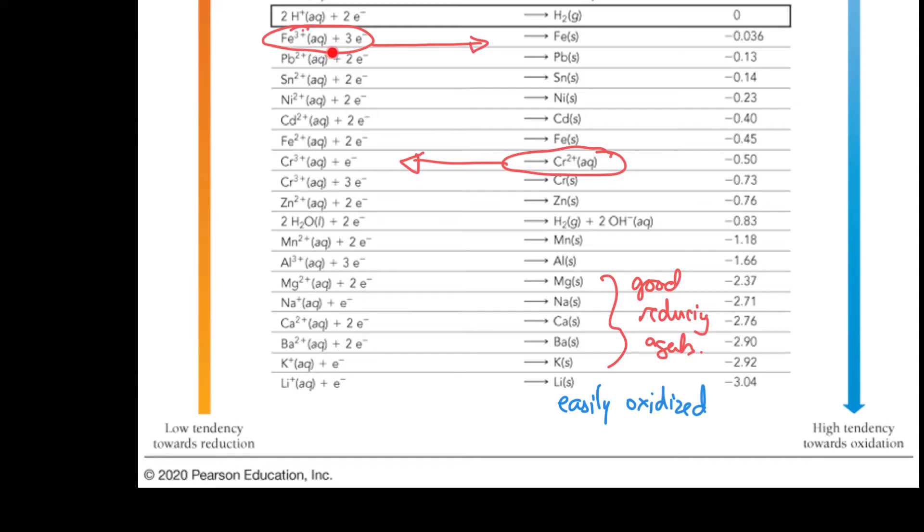So if we ever built a cell out of these two, this cell reaction would go forwards and this cell reaction would go backwards. In fact, some people kind of refer to this as a diagonal rule. You collect things that are higher up on the left with lower down on the right, and then the one reaction goes forward and the other reaction goes backwards.